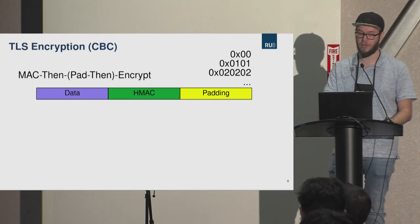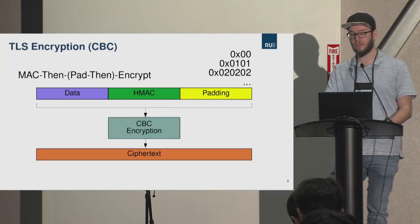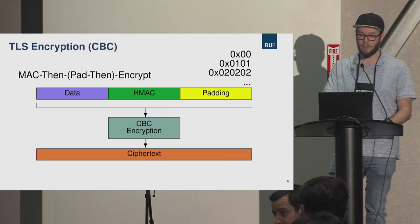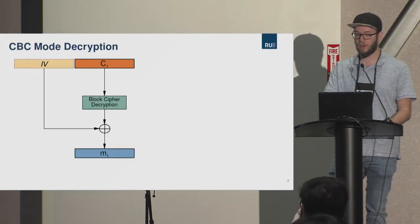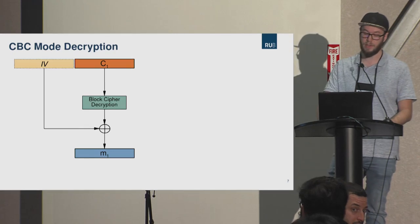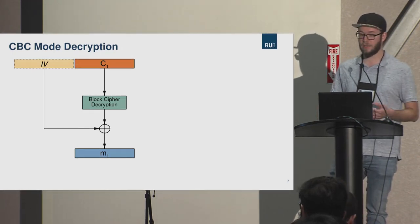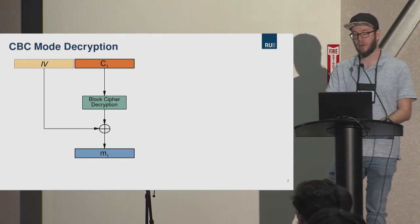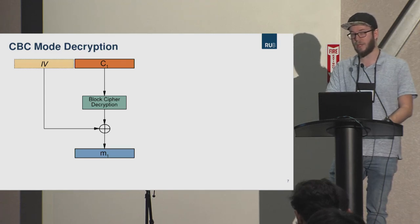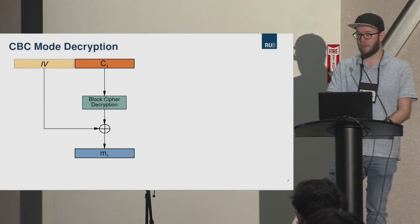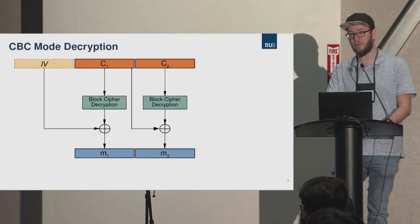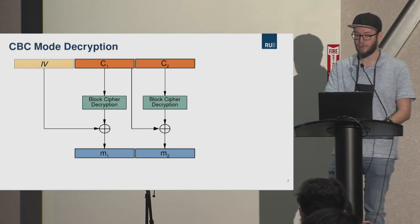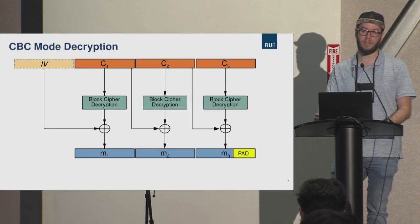After padding, you put all your data into the CBC encryption function and get ciphertext to transmit. For decryption, you put a block of ciphertext through a block cipher, then XOR with an initialization vector to get the plaintext. With more than one block, you XOR the previous ciphertext block with the result of the block cipher operation to get the next plaintext block, continuing until all plaintext blocks are recovered. Eventually there will be padding at the end of the message.